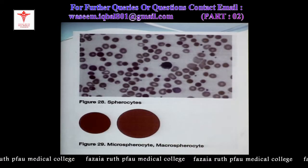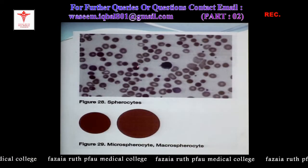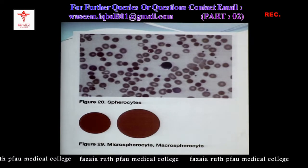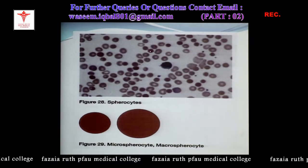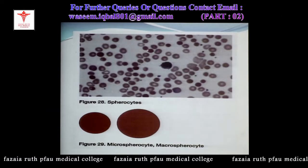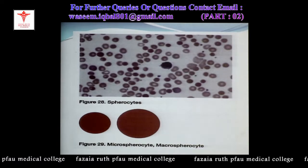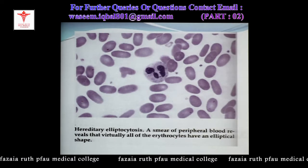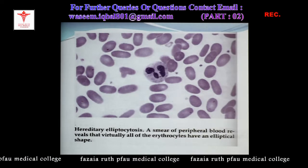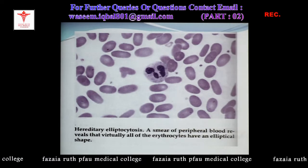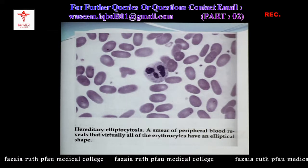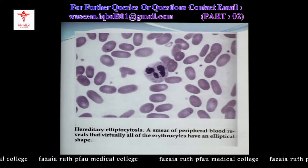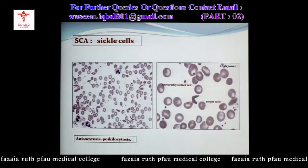This is an example of spherocytosis — these are spherocytes, they are small and more spheroidal. Hereditary elliptocytosis is very rare, and you can see the elliptical cells.